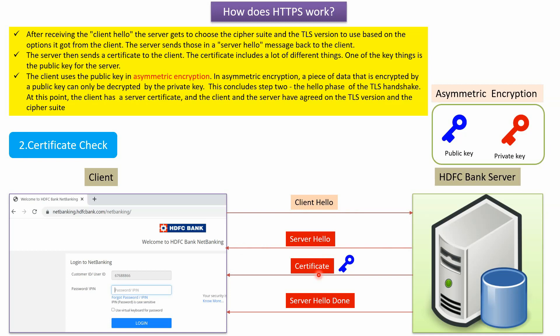This certificate includes many different things, but one of the key items is the public key for the server. The client uses this public key in asymmetric encryption, where data encrypted by the public key can only be decrypted by the private key. After sending the certificate and public key, the server sends a Server Hello Done message to the client. This concludes Step 2 — the hello phase — and at this point the client has the server certificate, and both sides have agreed on TLS version and cipher suite.